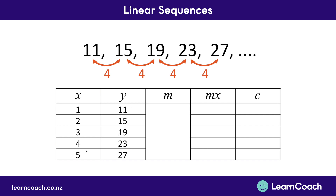M is the difference that you've just found. We know there's a difference of 4 between each of these Y numbers, so we put this difference of 4 in the M column. There's a 4 difference between 11 and 15, 15 and 19, 19 and 23, and 23 and 27. These should always be the same, and if they're not, you'll use the quadratic sequences video to solve it.